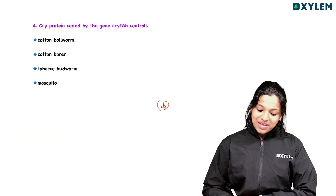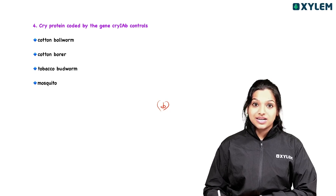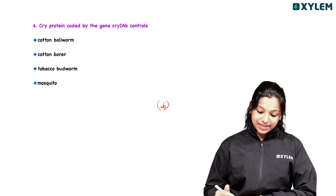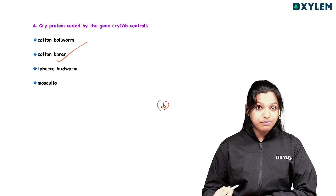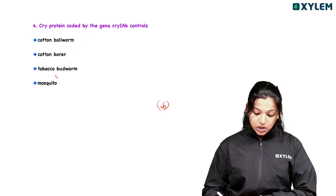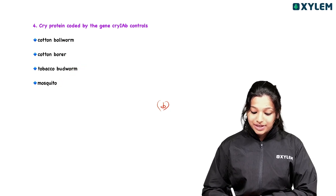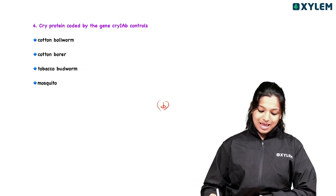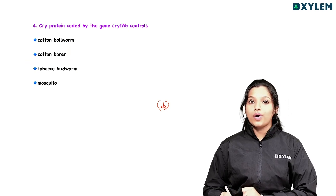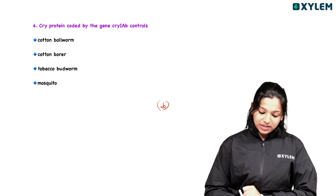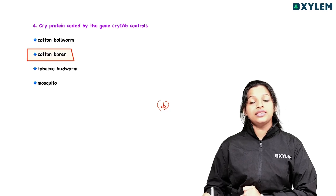Question four: Cry protein coded by the gene Cry1AB controls which pest? Options include cotton boll worm, cotton borer, tobacco budworm, and mosquito. The answer is cotton borer. Cry1AB controls cotton borer. This is an important item regarding the gene.